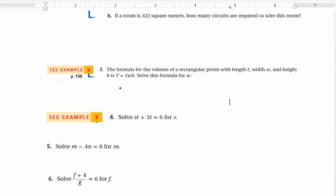Number 3 says the formula for the volume of a rectangular prism with length L, width W, and height H is V equals L times W times H. So I'm going to start by writing that out. They want us to solve this formula for W. It's very important that you know what they're trying to solve for, W. That's this variable right here. That means I want that on one side of the equation by itself. It's already on the right side, so that's fine, I can leave it there.